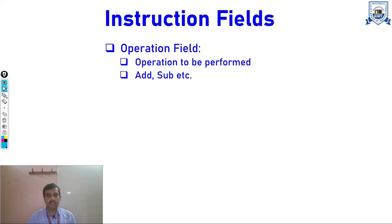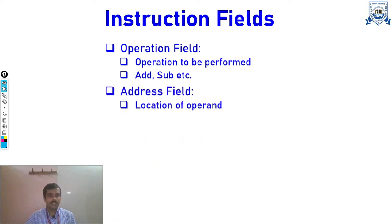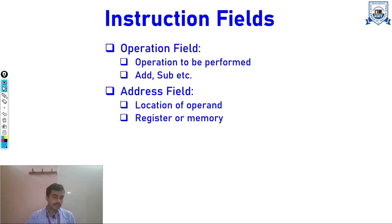The operation may be addition, subtraction, multiplication, division, or comparison. It basically tells our machine what operation it will perform, and this is communicated with the help of the opcode. The address field tells about the location of the operand or the effective address.